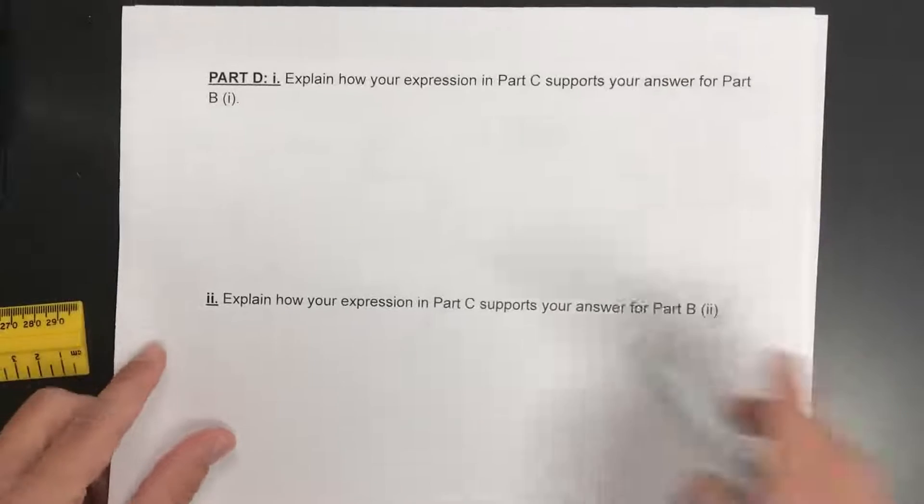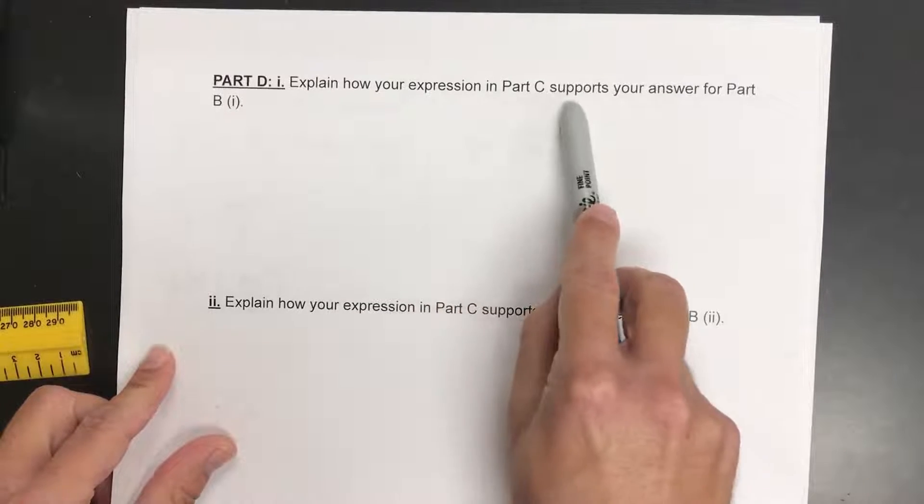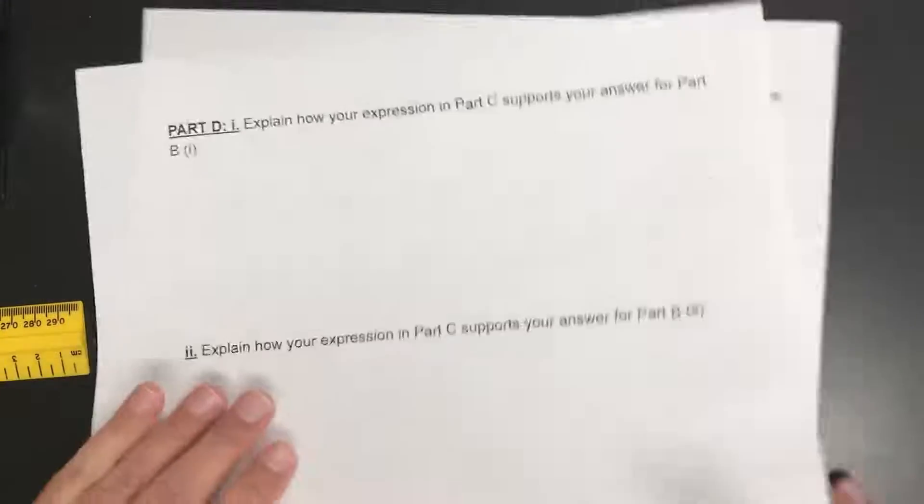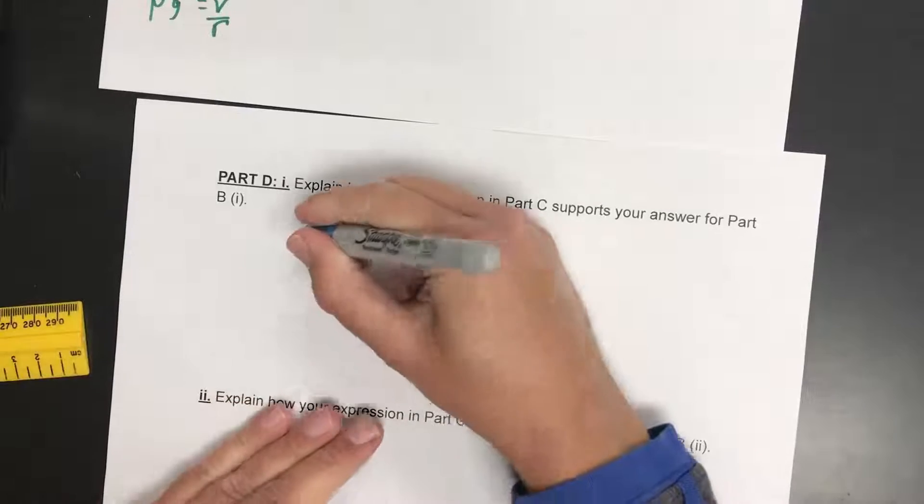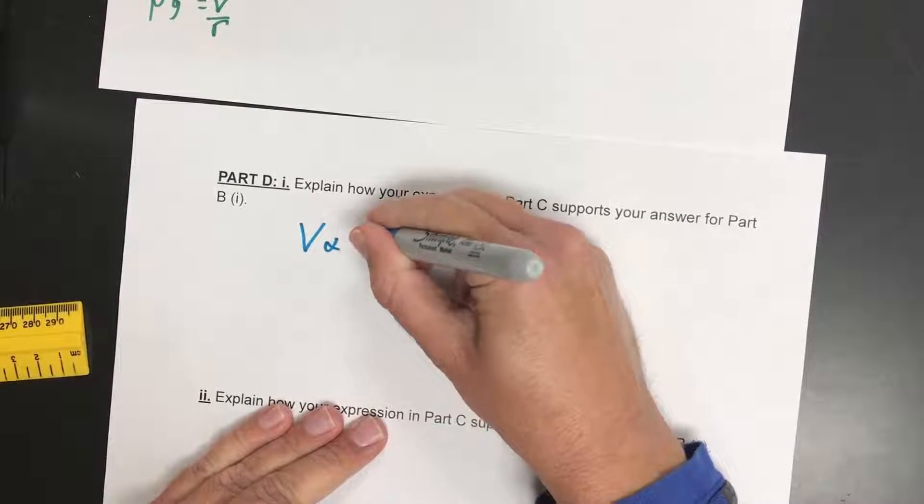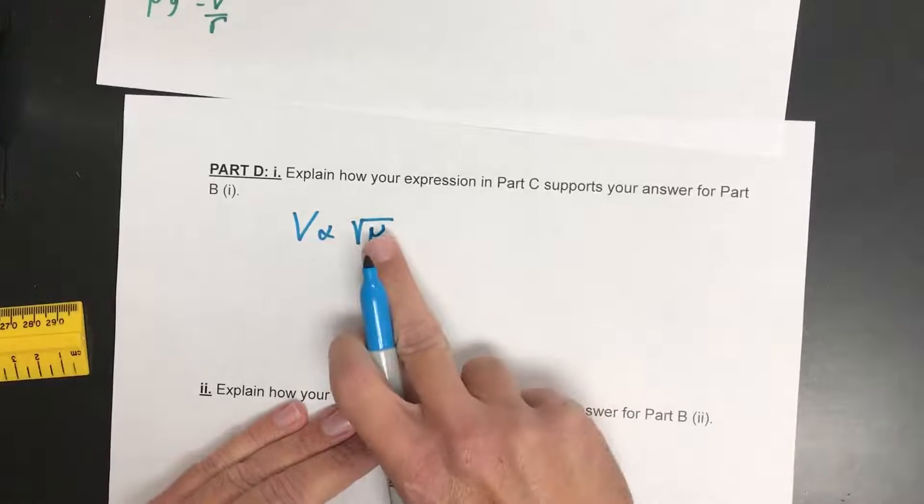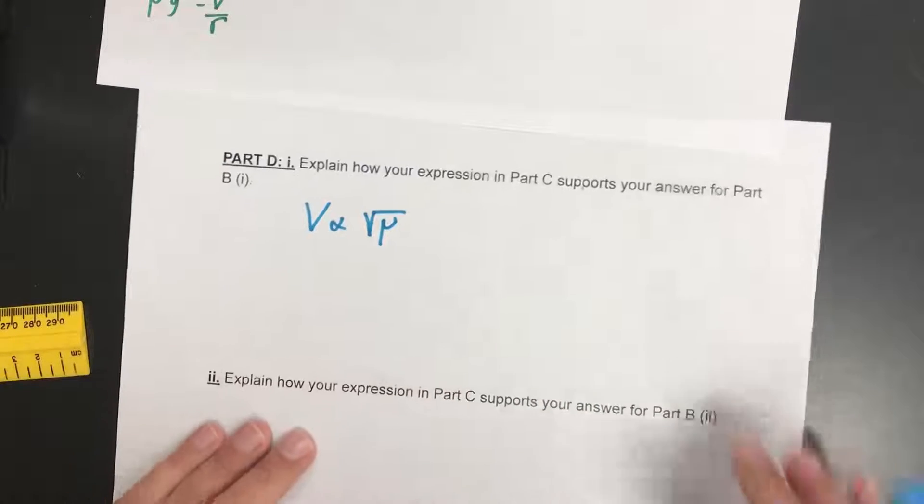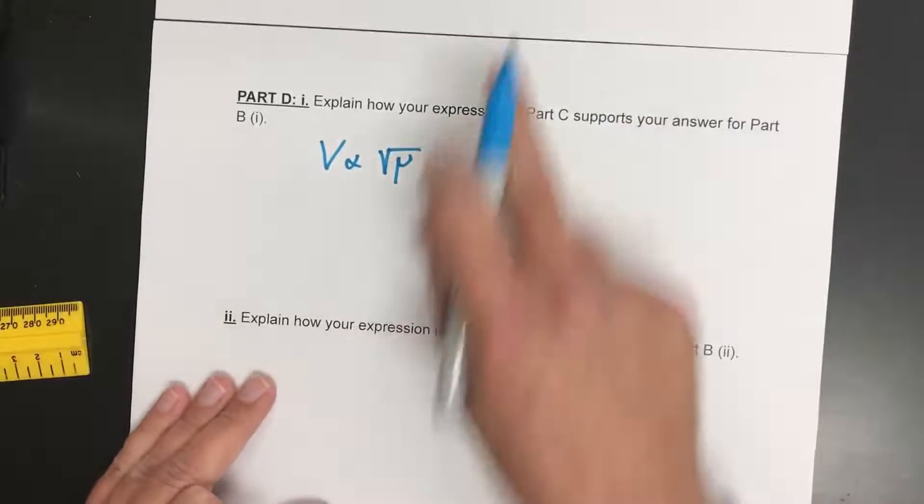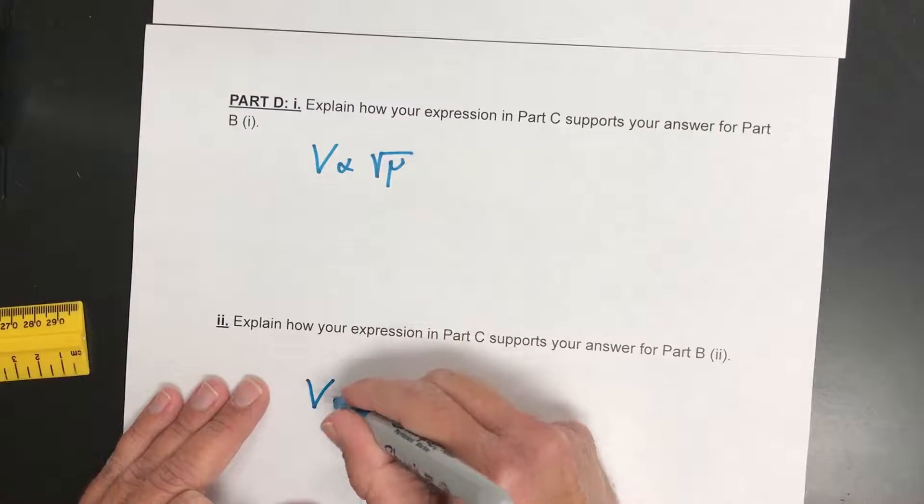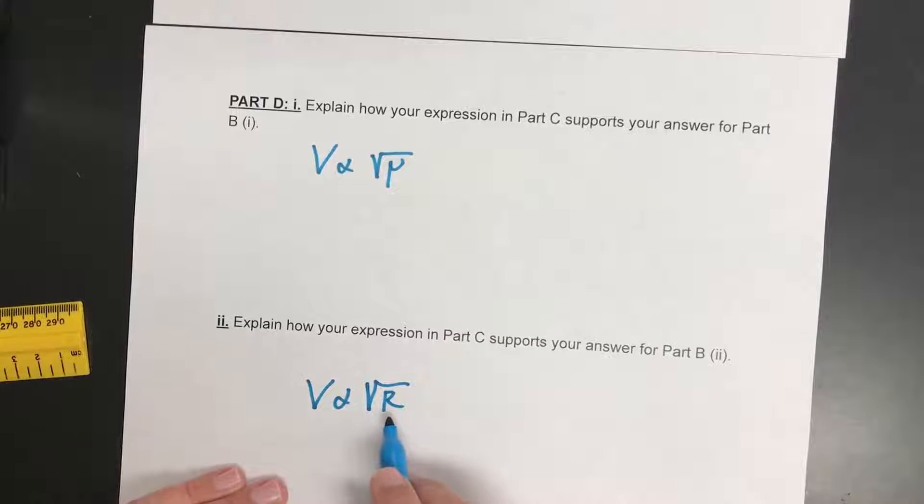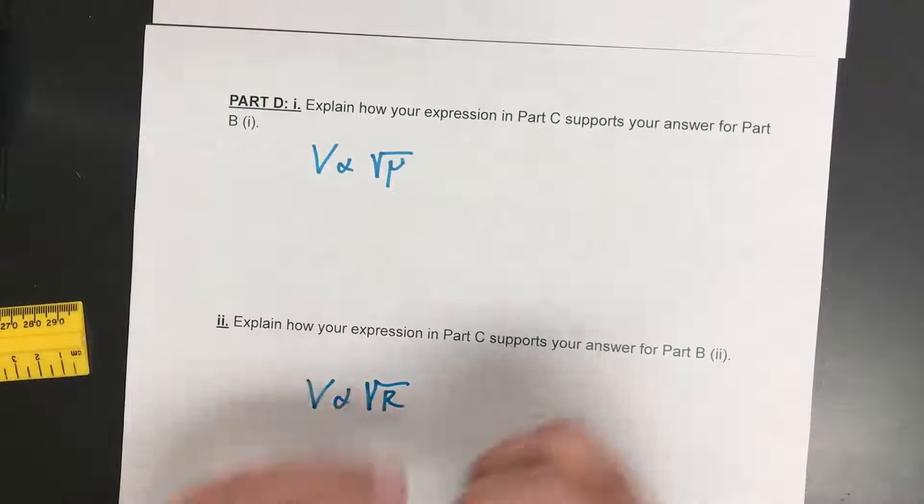So the last part here is they say explain how your expression in part c supports your answers for part bi. That one was basically talking about friction and velocity. So if we look here, the velocity is proportional to the square root of the coefficient. So if we have less coefficient, we're going to have less velocity possible, which is what we said. And likewise, down here, the equation showed us that velocity is proportional to the square root of the radius. So a bigger radius, a bigger velocity possible.